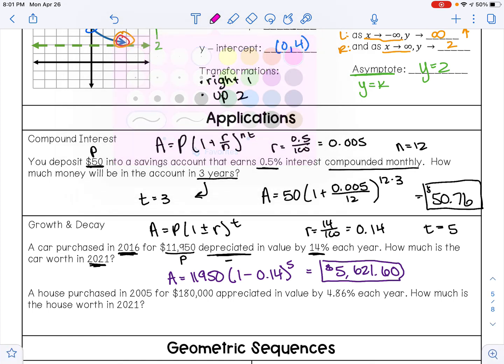For the next problem, it says a house purchased in 2005 for $180,000 appreciated in value, so it went up by 4.86% each year. How much is the house worth in 2021?